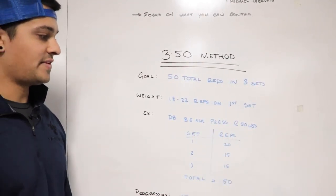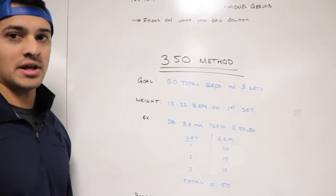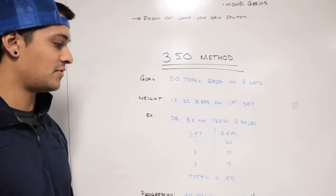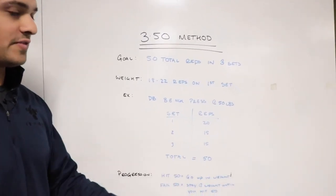For example, if we're going to do dumbbell bench press at 50 pounds, my first set I might do 20 reps and then I'm going to rest as I need. My second set I'm going to do 15 reps and then my third set I'm going to do 15 reps as well for a total of 50 reps.